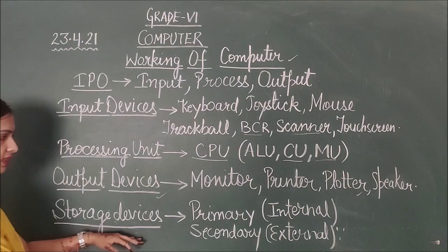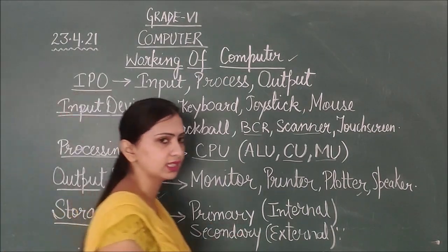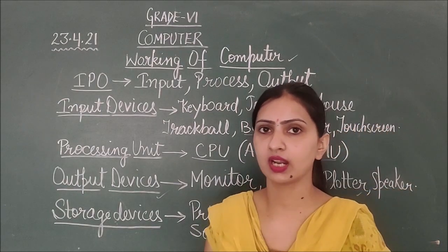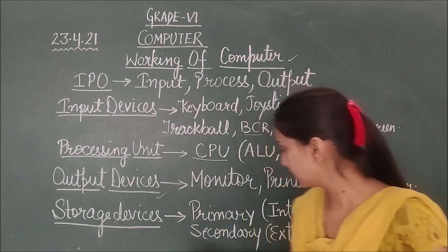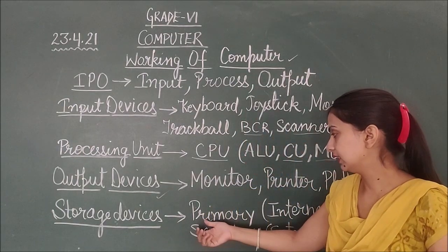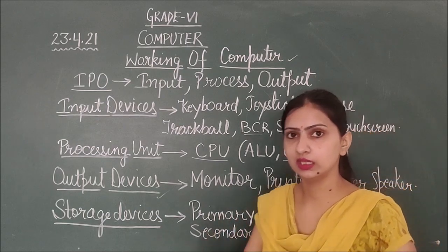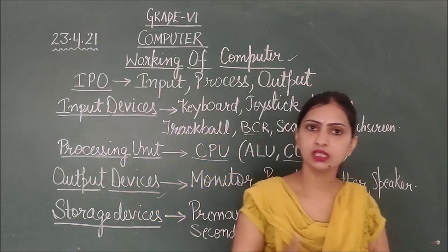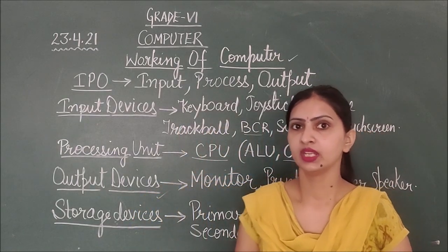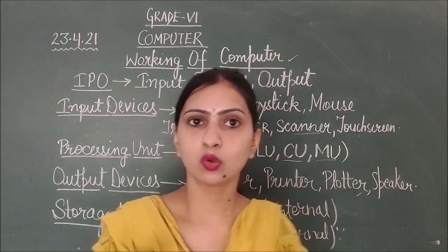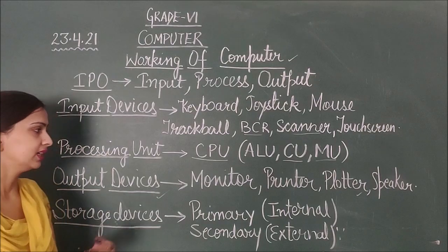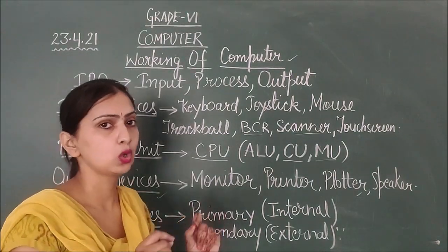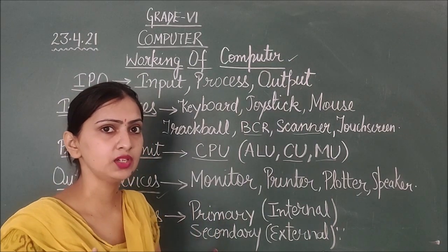Storage devices are of two types: primary device and secondary device. Secondary means external devices. Primary memory is internal memory like RAM and ROM are primary memory. RAM is Random Access Memory. ROM is Read Only Memory.